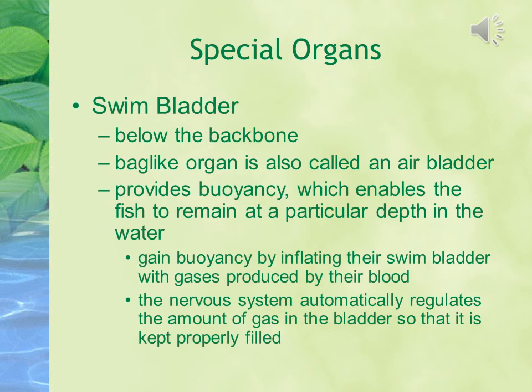The special organ of the fish is the swim bladder, present below the backbone. It is a bag-like organ also known as the air bladder. It provides buoyancy, which enables the fish to remain at a particular depth in the water. Fish gain buoyancy by inflating their swim bladder with gases produced by their blood. The nervous system automatically regulates the amount of gas in the bladder so that it is kept properly filled.